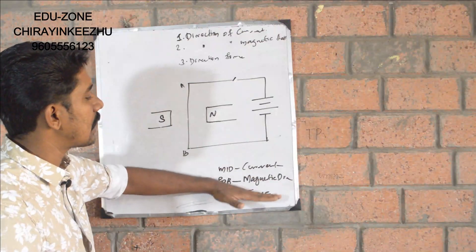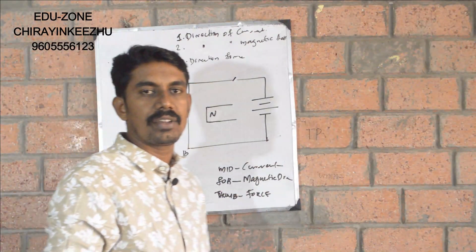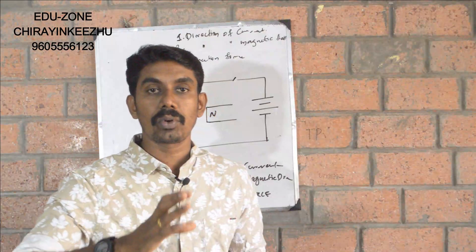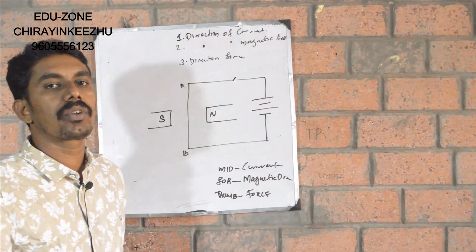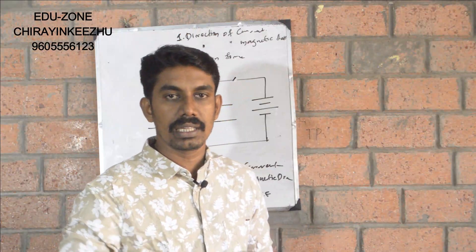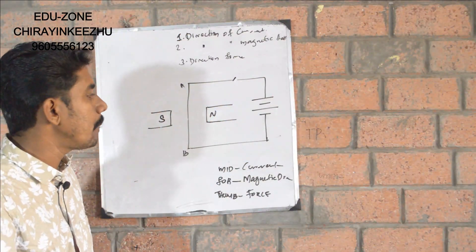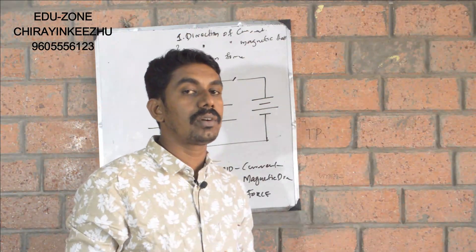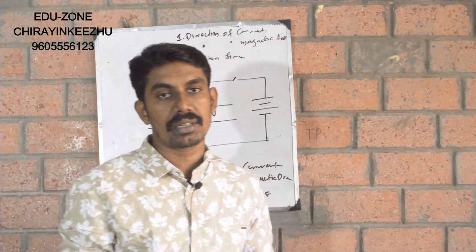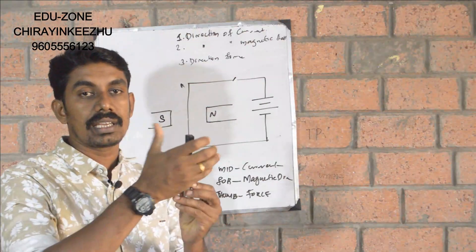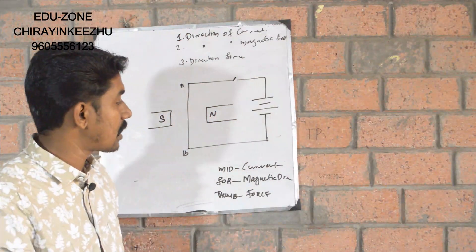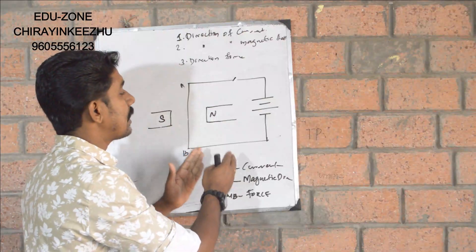These three rules are Fleming's Left Hand Rule. The other rule is James Clark Maxwell's right hand rule. We are learning Fleming's Left Hand Rule. There is some confusion between Fleming's Left Hand Rule and James Clark Maxwell's right hand rule. Maxwell's right hand rule is applied to a conductor carrying current to find the magnetic field direction.